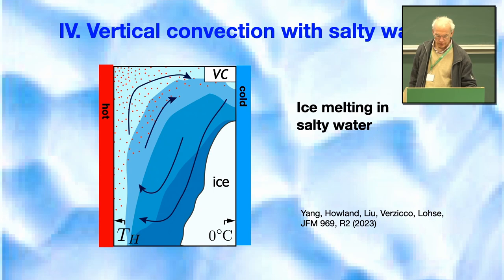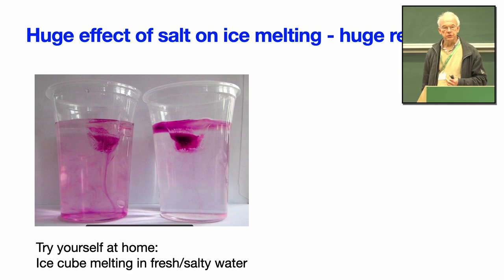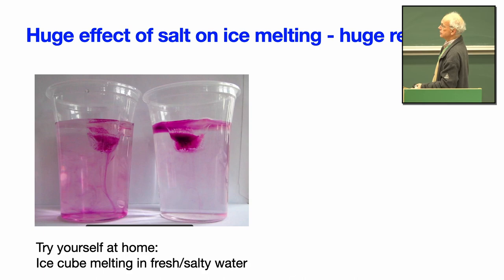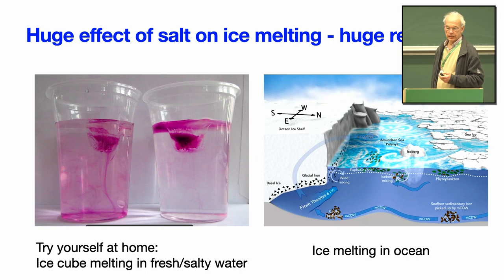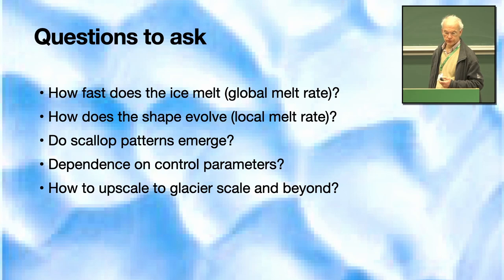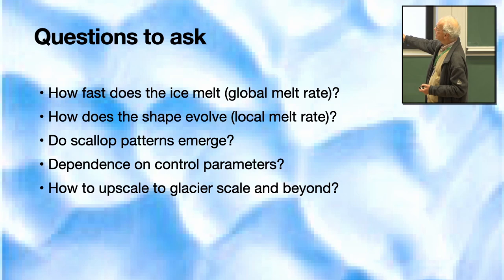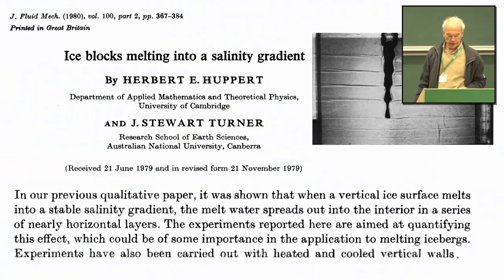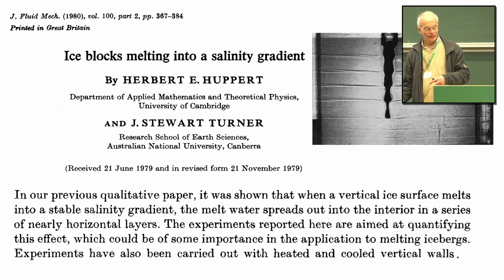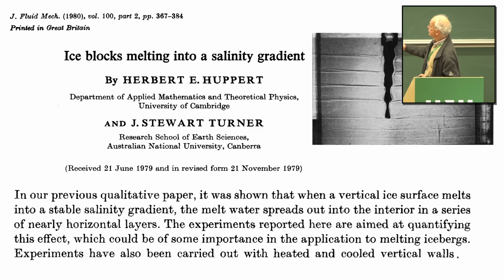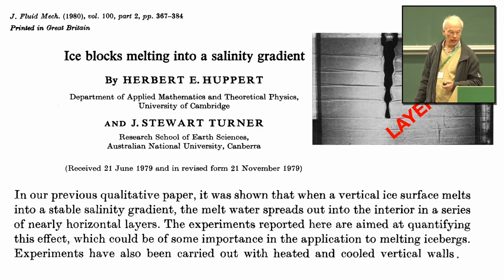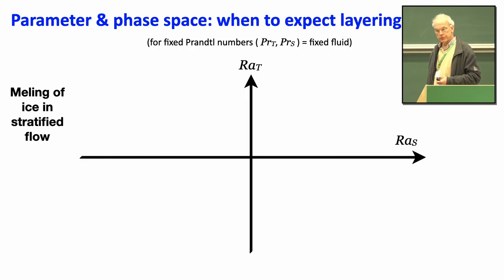Now the key problem: vertical convection with salty water — ice melting in salty water. You can try it yourself: ice in fresh water versus salty water is hugely different. In the geophysical context, it's always salty water. Questions include how fast does ice melt, how does the shape evolve, do scallops form, what is the parameter dependence, and how to upscale to glacier scale? A famous paper by Herbert Huppert and Stuart Turner showed layering when an ice block is melted into a salinity gradient.